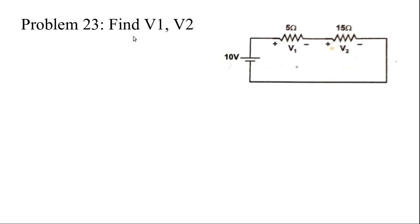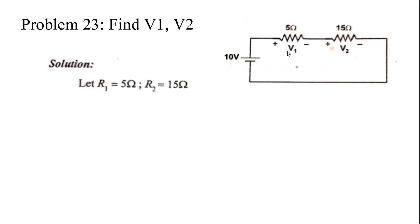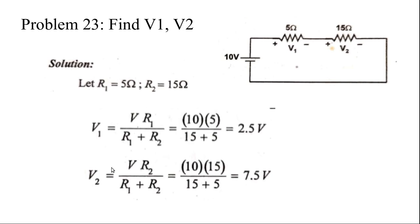You have to find V1 and V2. How to find V1 and V2 when two voltages are connected in series — you can use the voltage divider rule. This is R1 and this is R2, so 5 ohm and 15 ohm. According to the voltage divider rule, if you want to find V1, V1 is equal to V times R1 divided by R1 plus R2.